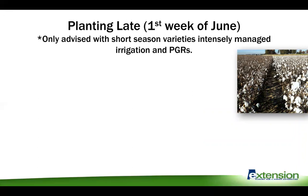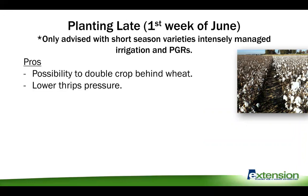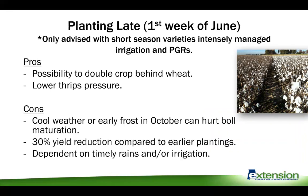Lastly, it is possible to do late planting up to the first week of June, but no later than that. This is only advised when you're really pushing short-season varieties with irrigation and PGRs. Some pros are that it does allow you to double crop behind wheat — that's usually the only reason you would want to plant this late. You can also miss your thrips pressure in May on young cotton seedlings.